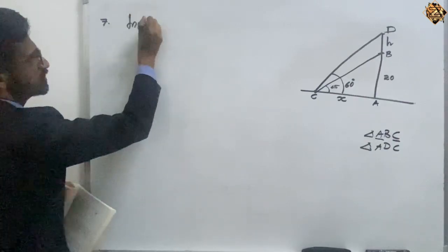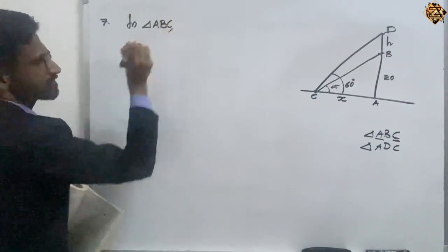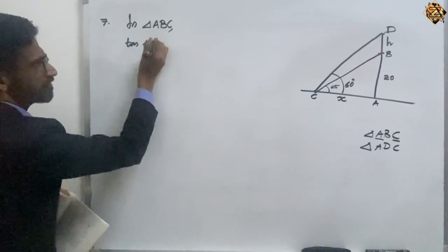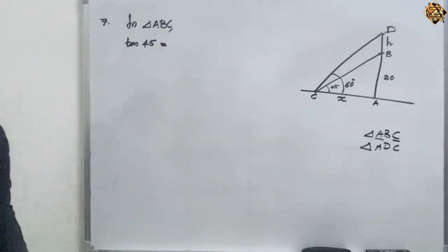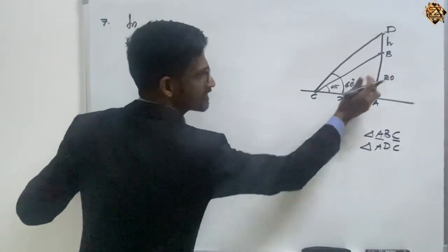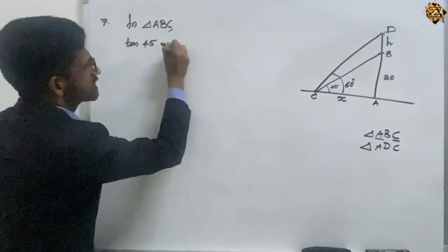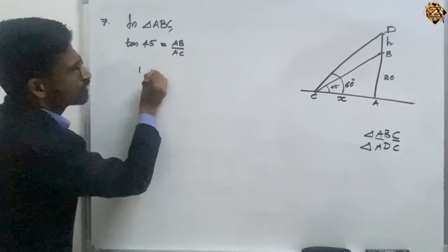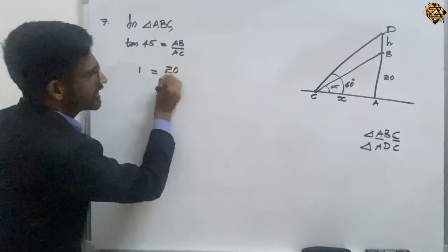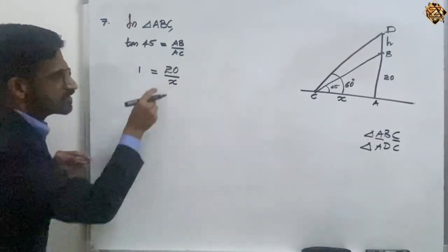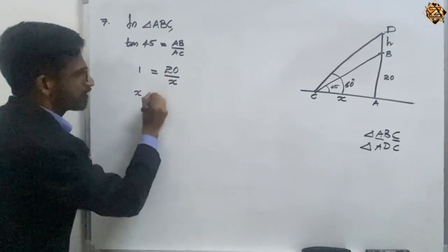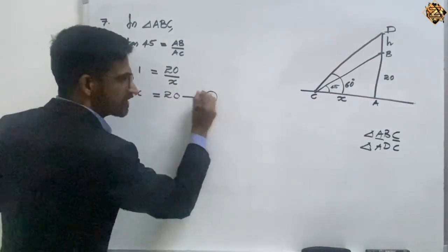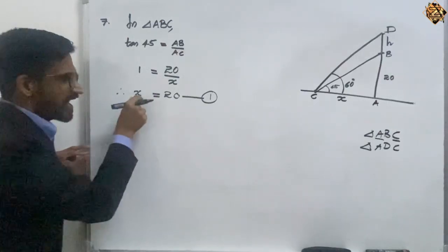First we will take triangle ABC. In triangle ABC, the angle is 45 degrees, so tan 45 equals opposite by adjacent, that is AB by AC. The value of tan 45 is 1, equal to 20 by AC, which is X. Therefore X equals 20. This is equation 1.